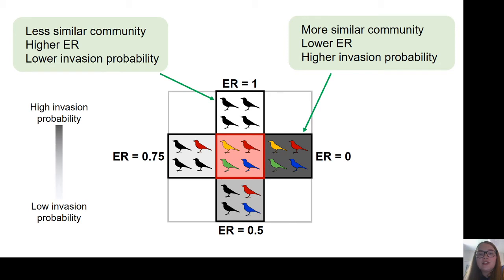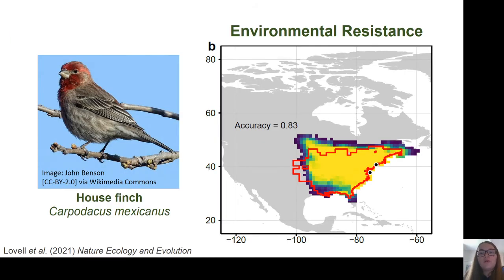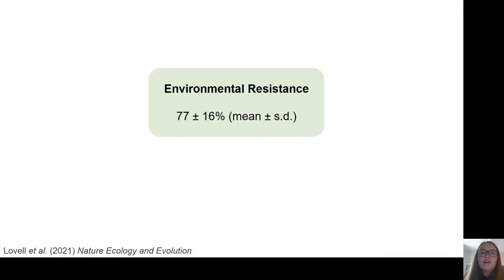We ran these simulations with probability determined by the environmental resistance relative to the establishment site, and stopped our simulations when the observed range size was reached. Here is one example for the house finch, which has been introduced to the United States at two sites indicated by black dots. The red line is the observed alien range for this species, and the heat map is the predicted distribution across 100 repeat simulations of the environmental resistance model. The environmental resistance model predicted this species' range quite well, with an accuracy of 83%. Across all alien bird species, on average, environmental resistance predicted spread with an accuracy of 77%.